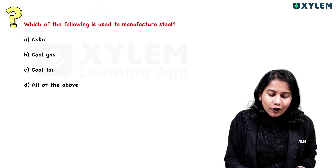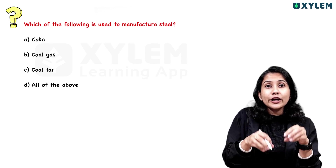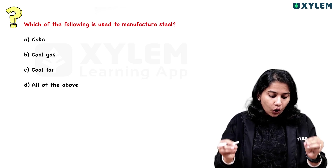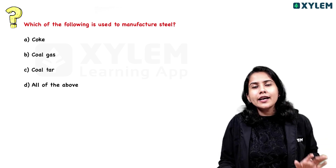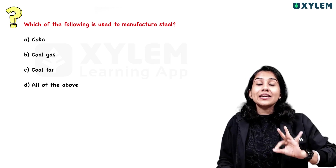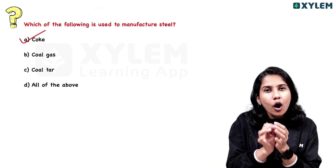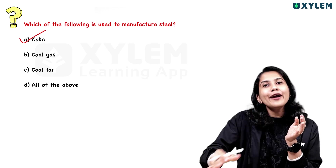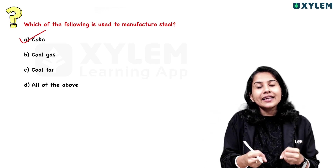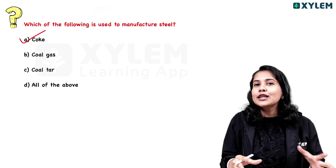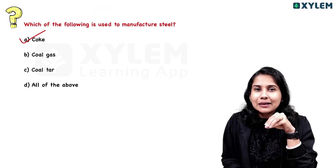Next question: Which of the following is used to manufacture steel in the manufacturing process? The options are: Coal gas, Coal tar, All of the above. The answer is Coke. In steel manufacturing, we use coke. We also use coke in metallurgy to extract metals and minerals. That is why coke is the essential item.